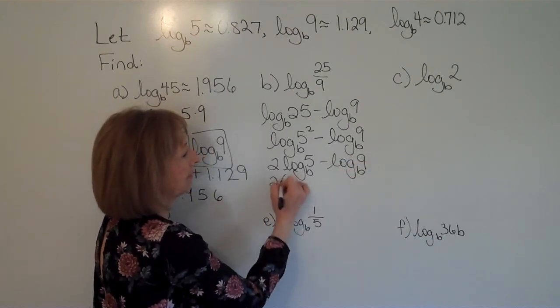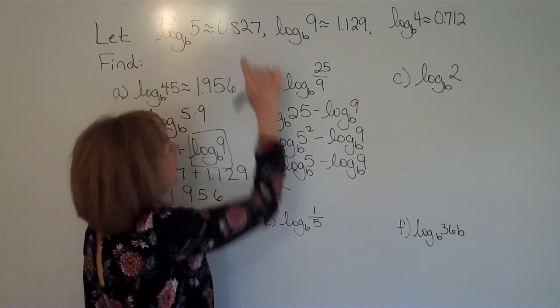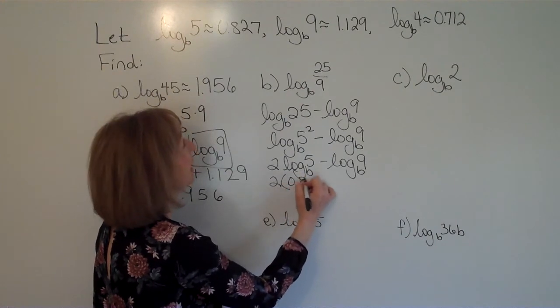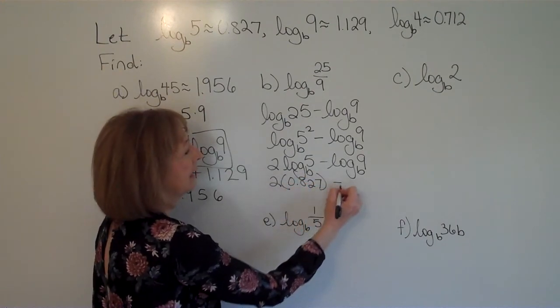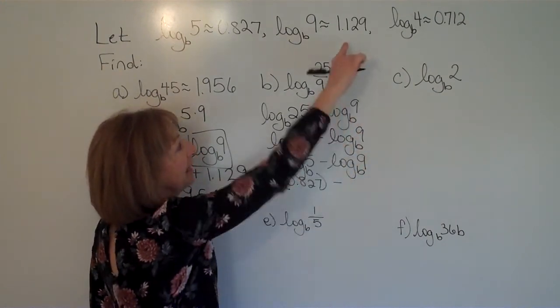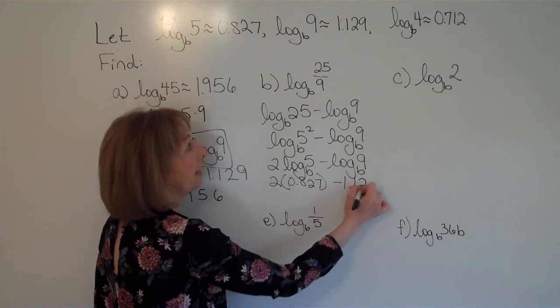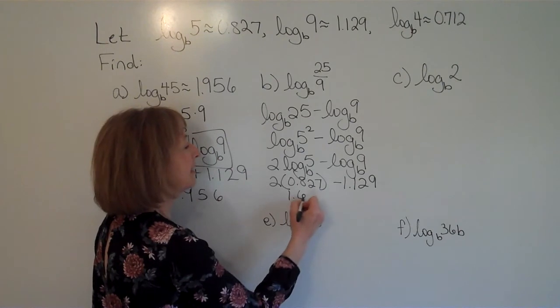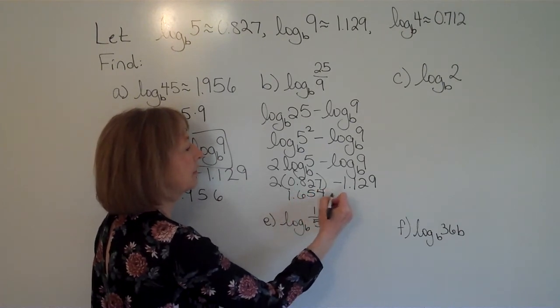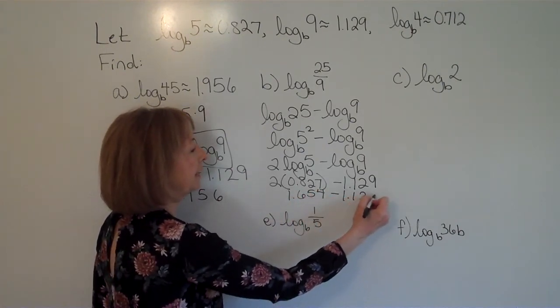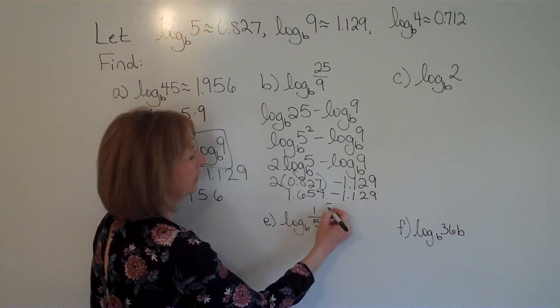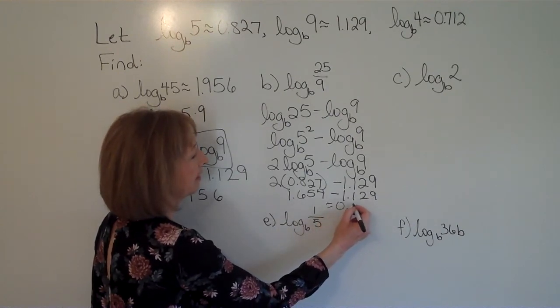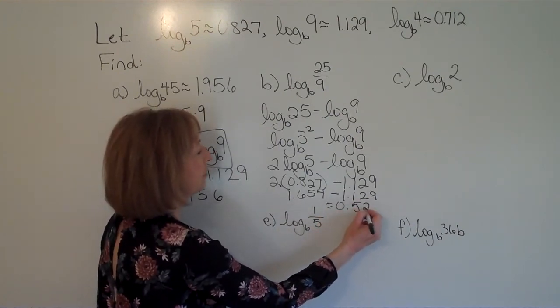So that's 2 times my log base b of 5 is 0.827, and my log base b of 9 is 1.129. So that gives me 1.654 minus 1.129, which is about equal to 0.525.